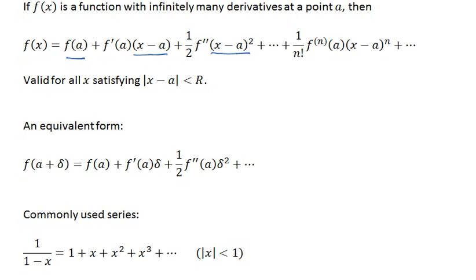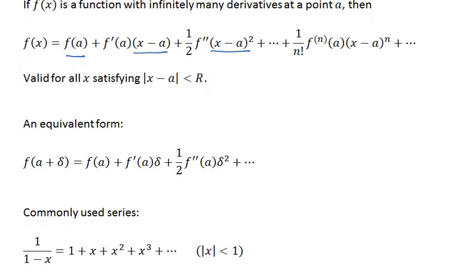The series is valid for those values of x whose absolute value, whose distance from a, absolute value of x minus a, is less than some number R which is known as the radius of convergence. R could be any number, could even be zero in which case the series doesn't converge at all.